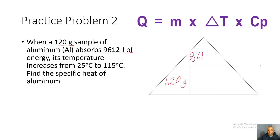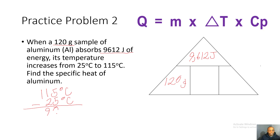Q is 9,612 joules. The temperature increases from 25 to 115 degrees Celsius, so the change in temperature is 115 minus 25 equals 90 degrees Celsius. We are solving for specific heat, so we place a question mark there.